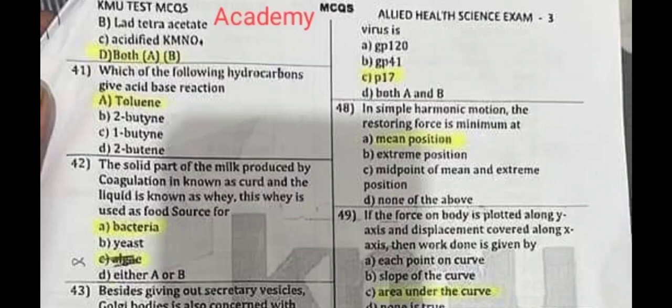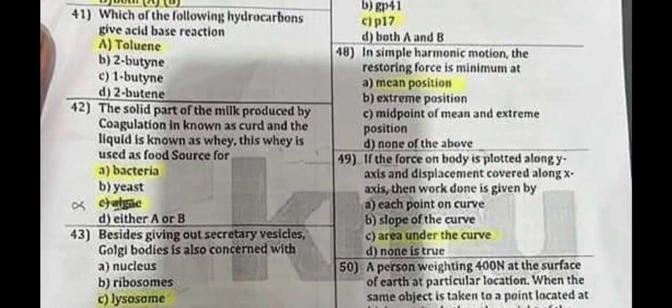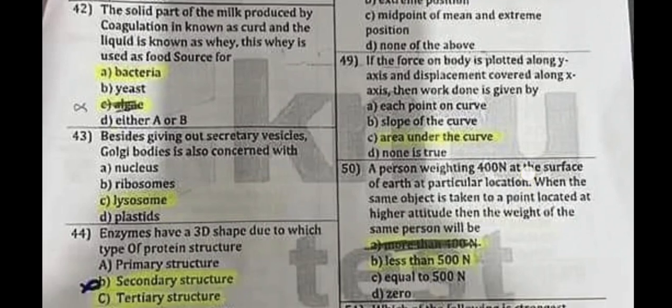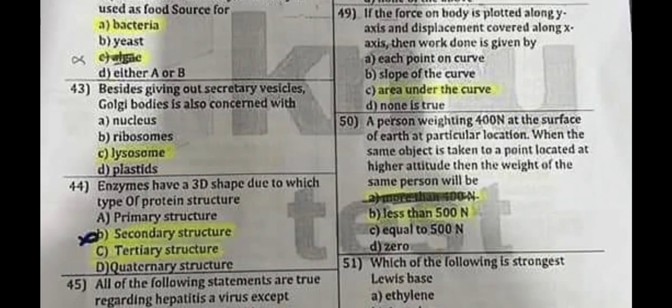Question number 42: The solid part of milk produced by coagulation is known as curd, and the liquid is known as whey; this whey is used as a food source for bacteria. Question number 43: Besides giving out secretory vesicles, Golgi bodies are also concerned with lysosome formation.